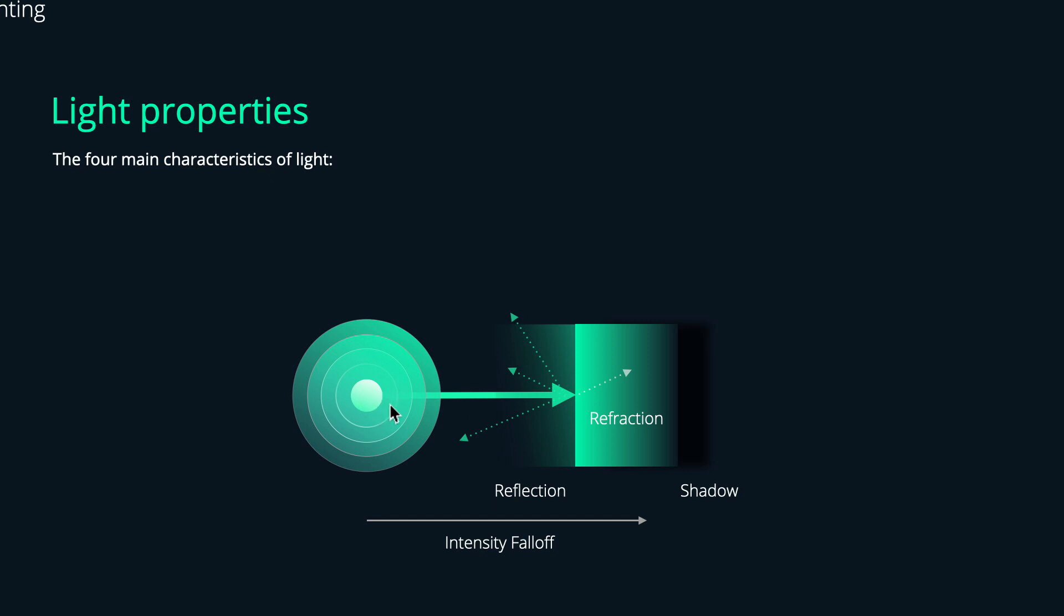When we have an object here on the right side and we have a light source on the left side shining light onto this object, the first thing we shall notice is that over distance the light intensity will decrease. This is mostly because of atmospheric particles which are in the air which absorb the light, so over distance the light intensity will diminish.